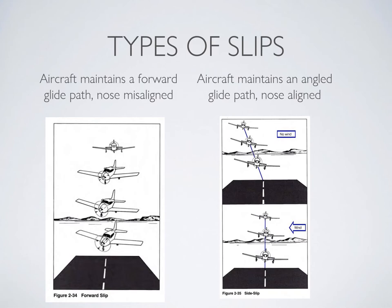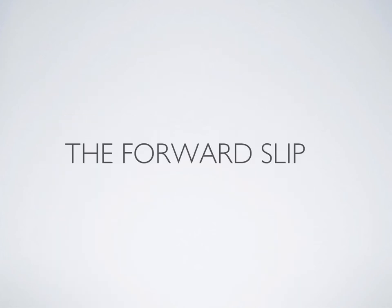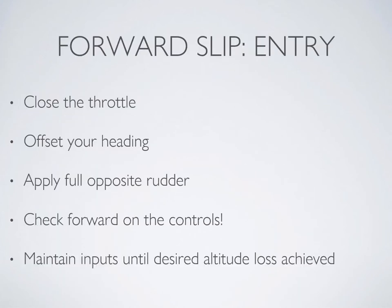Both types of slip involve cross controlling, however the way in which they are executed is different. To execute a forward slip, start from straight and level flight at a safe altitude. First remove power, then offset your heading either to the left or to the right, and then apply full opposite rudder. Push forward on the yoke to prevent the nose from popping up, and maintain these inputs until the desired altitude loss has been achieved. To recover, simply simultaneously release all three inputs.